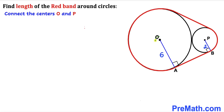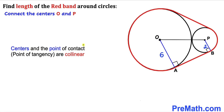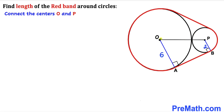Let's connect centers O and P. As shown in the next diagram, I have connected these two centers. Recall a crucial fact: centers O and P and the point of tangency all lie on the same line. The radius of the larger circle is 6 units and the radius of the smaller circle is 2 units, so the total distance OP is 6 plus 2, which equals 8 units.